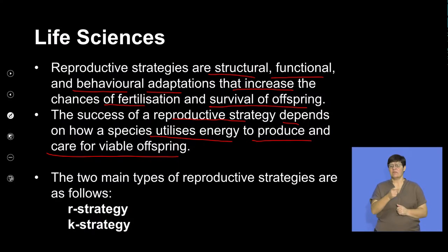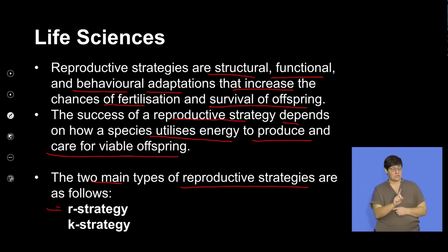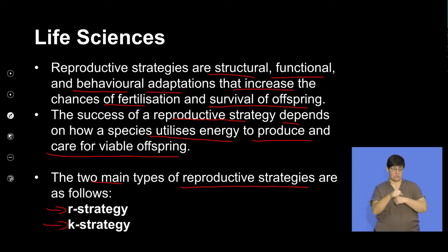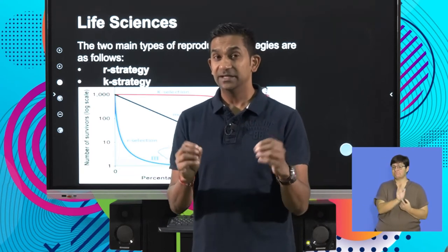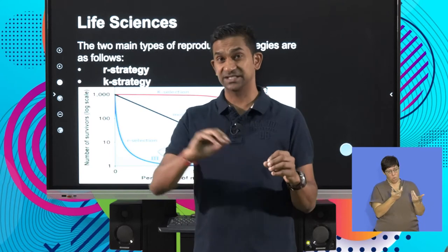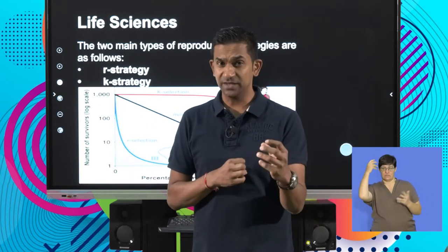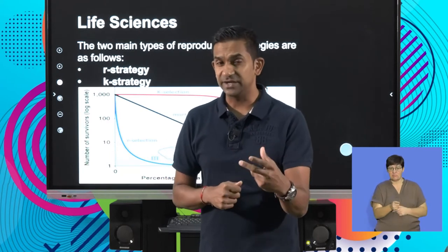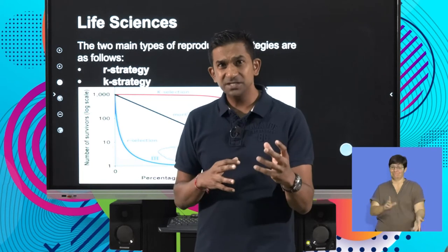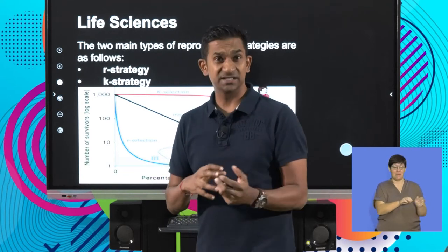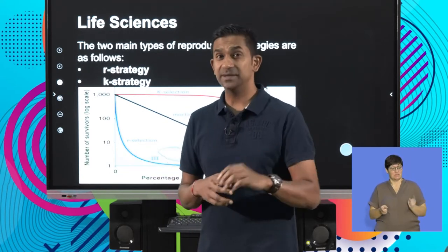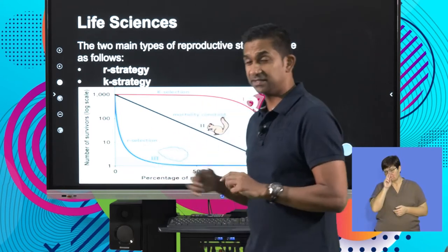There are two types of reproductive strategies broadly speaking: the R strategy and the K strategy. These strategies essentially describe the chances of individuals surviving from birth until adulthood. Some species have a high survival rate, others have a low survival rate. The question is how a species with less advanced reproductive strategies is still able to survive and produce offspring.